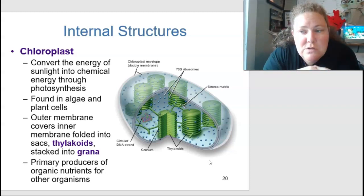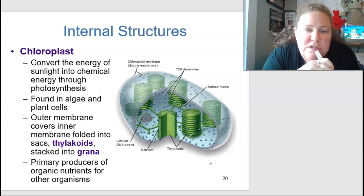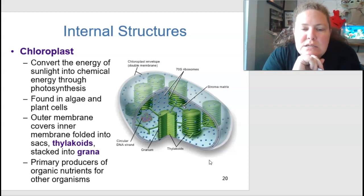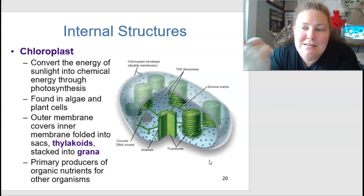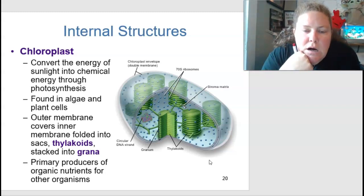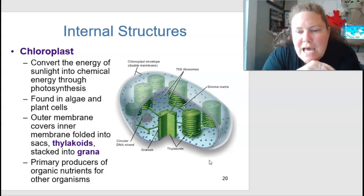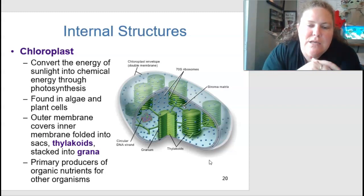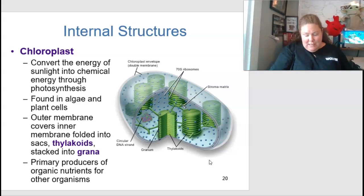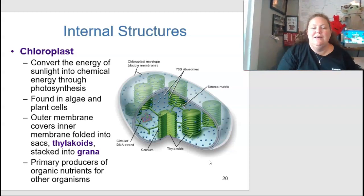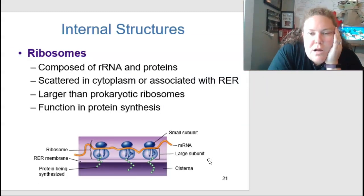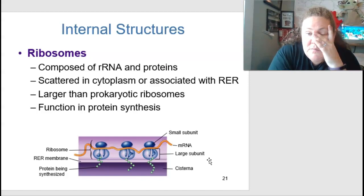Chloroplasts are specialized organelles — we don't have them because we don't do photosynthesis. They convert sunlight into chemical energy through photosynthesis and are found in algae and plant cells. The outer membrane covers inner membranes folded into sacs called thylakoids, which are stacked into grana as visible in the image. Chloroplasts are the primary producers of organic nutrients for other organisms.